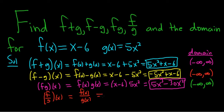And so this is equal to, well, f(x) is simply x minus 6. And then g(x) is 5x squared. And that's it. You can't really do anything else with this. You could break it up, but there is no point.